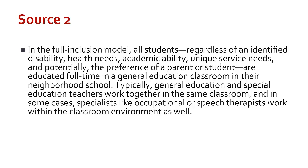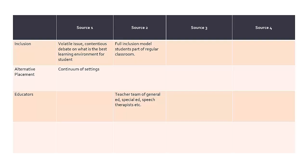After processing your first source, you move on to source 2. Full inclusion can be added to the existing inclusion row. Then we can add the idea of having specialist educators in a new row. As you can see, we added to the first line how source 2 talks about inclusion, and then added educators as a main idea and how source 2 talks about it. Since source 1 didn't talk about educators, we will leave that cell blank, just as we did for source 2 talking about alternative placement.